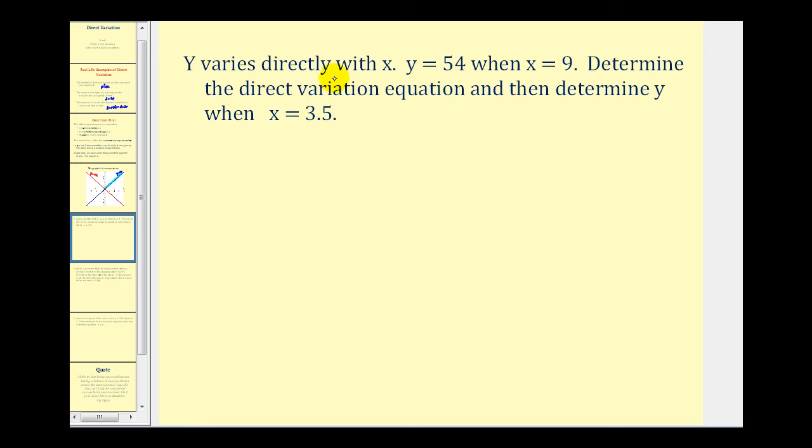Here we're given that Y varies directly with X. So that tells us right away that the equation we're going to be dealing with is Y equals KX. Next, we're told that Y equals 54 when X equals nine. We want to do two things in this problem. We want to determine the direct variation equation, and then determine Y when X equals 3.5. To determine the direct variation equation, we need to find K.